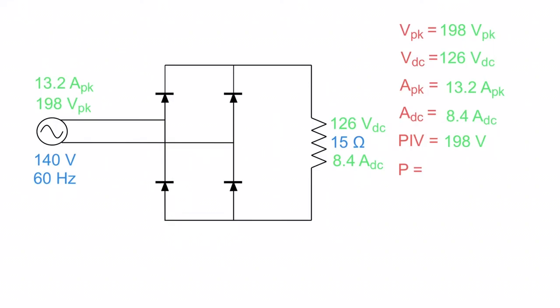And last is our power being dissipated at the resistor. To get our power is just v-peak times i-peak, divided by two, because this is a full-wave rectified circuit. That gives us our power. So we plug the numbers in and we get 1,306 watts by taking 198 volts times 13.2 amps and dividing it by two.